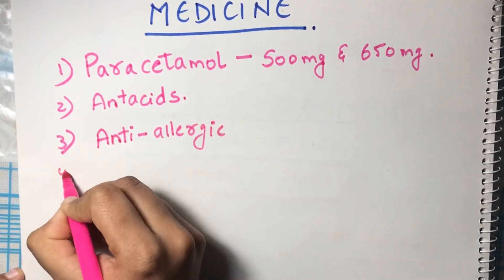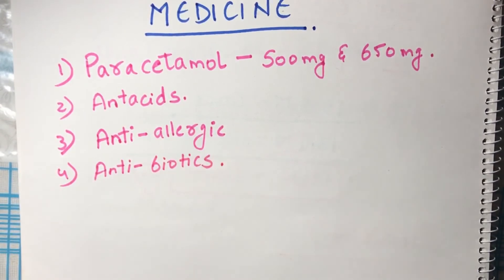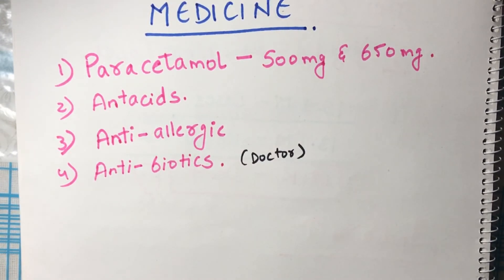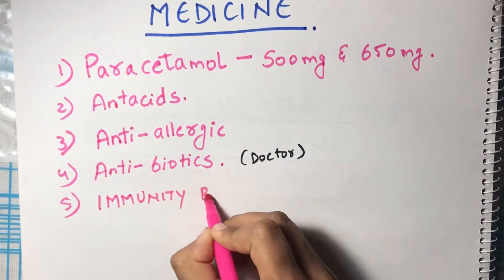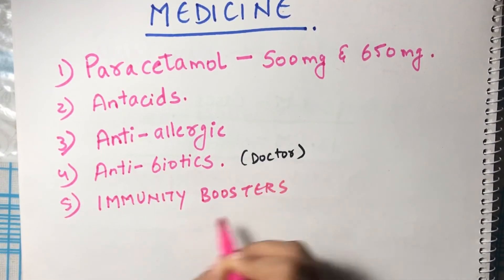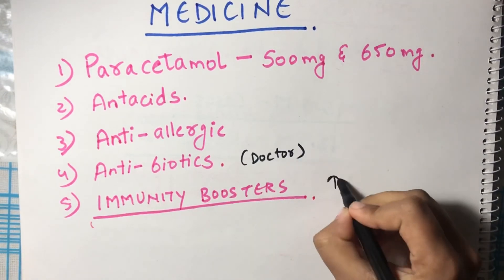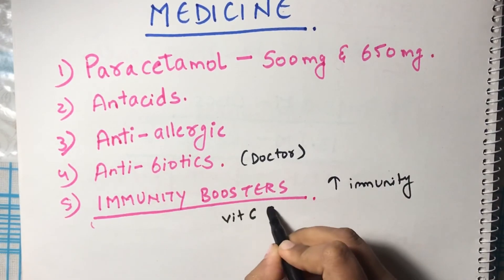For antibiotics, I will recommend you to consult your doctor. And the fifth one is very, very important: immunity boosters. These immunity boosters you should have daily to increase your immunity, and they will help you to fight with the coronavirus if you get infected in the future.